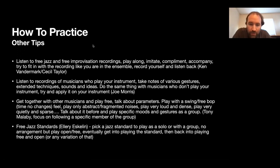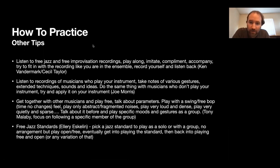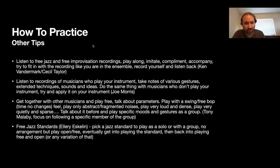Joe Morris talked about how as a guitar player, he would transcribe the saxophonist John Tchicai, one of the saxophonists on John Coltrane's Ascension. John Tchicai had this circular, circuitous way of playing the alto saxophone that Joe Morris really enjoyed sonically, so he started transcribing these circular gestures and patterns — but on guitar. From that cross-transfer from saxophone to guitar, he basically developed his own language and style of guitar playing.